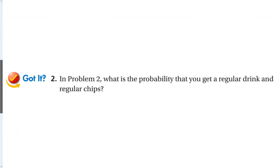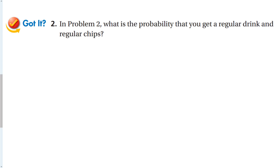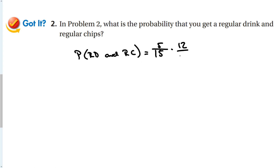Now let's find the probability of a regular drink and regular chips. There were 5 regular drinks, so that's 5 out of 15, times 12 bags of regular chips out of 20. Multiplying 5/15 times 12/20 and reducing gives us 1 over 5, which is 20% — a little bit less probability than getting the diet and fat-free options.